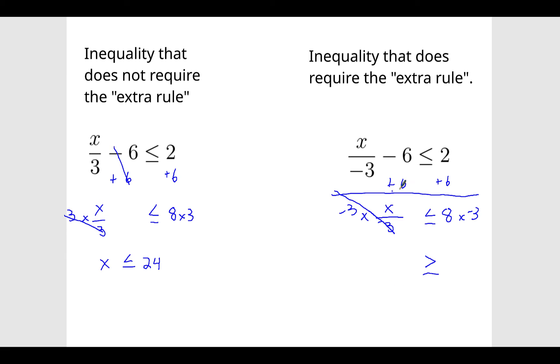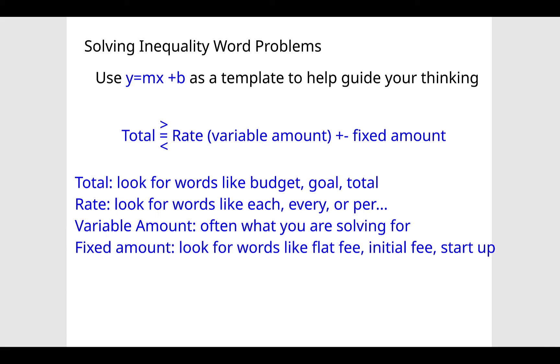These cancel out, and you're left with just x here. 8 times negative 3 is negative 24. So notice these are different problems. This one ended up being negative, and the direction of the inequality has changed.